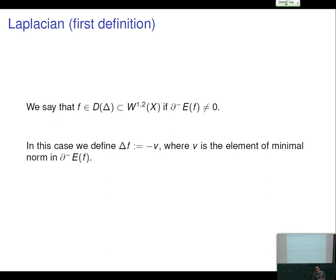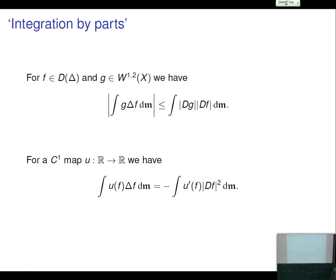On ℝ^d or a manifold, the subdifferential of the Dirichlet energy at f is non-empty if and only if Δf ∈ L², and in that case the subdifferential has a unique element, which is -Δf. A basic integration by parts holds: for f with a Laplacian and g Sobolev, ∫g Δf dm is bounded in absolute value by ∫|Dg|·|Df| dm.